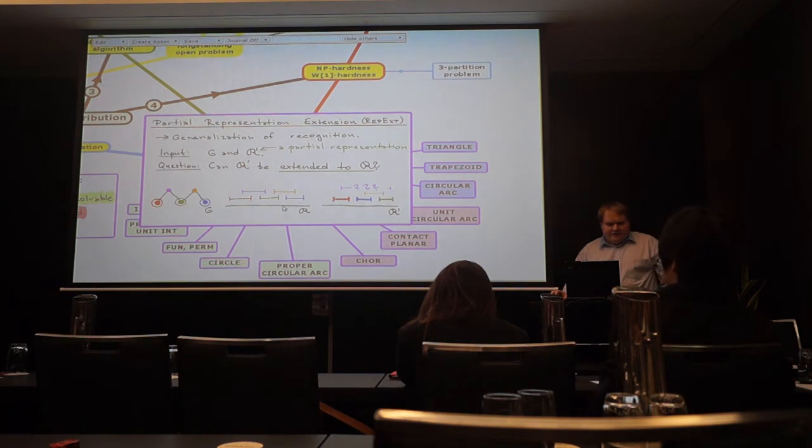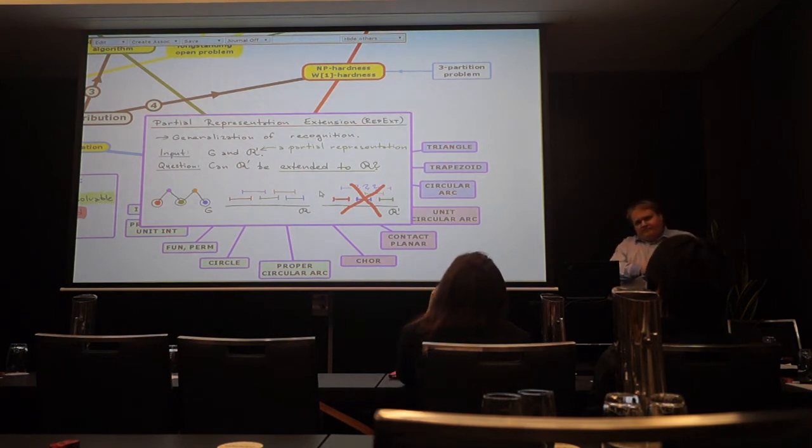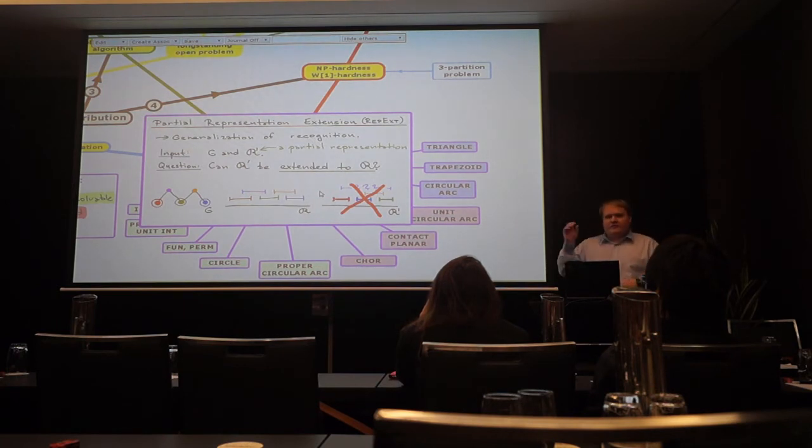So say this is an interval graph but if I draw these three guys in a wrong order I cannot finish it. I cannot add the purple guy here because it would have to intersect blue. Not possible. So here for instance you have an example of a non-extendable partial representation. So that was the algorithmic question and also the structural question. For which graph classes, for which types of representations we can solve also this generalization. Generalization if the partial representation is empty we will get recognition.